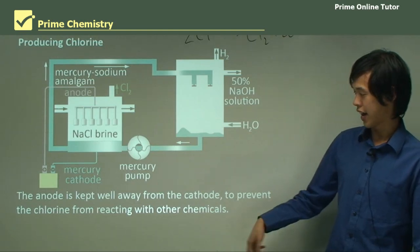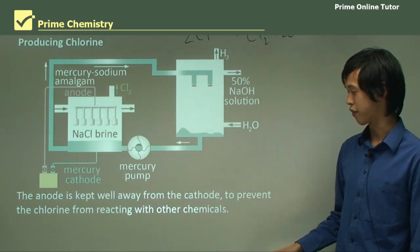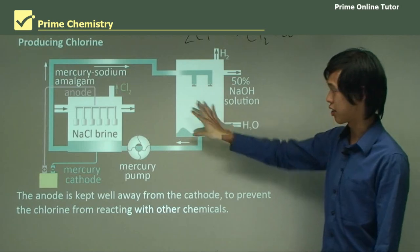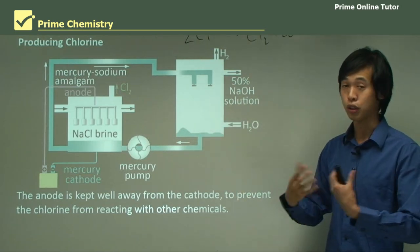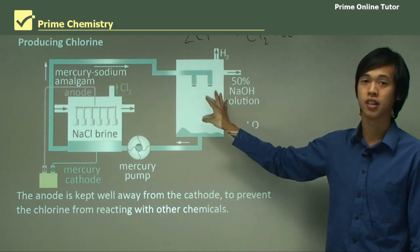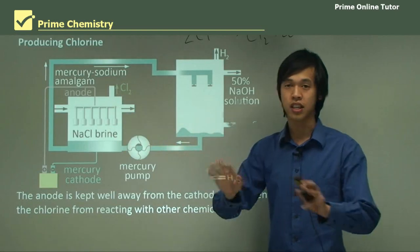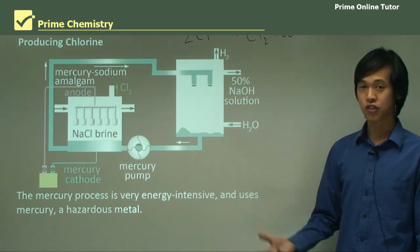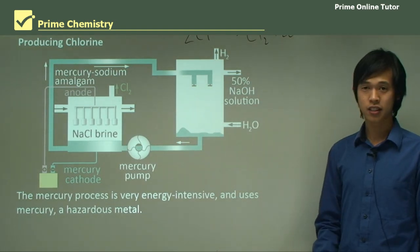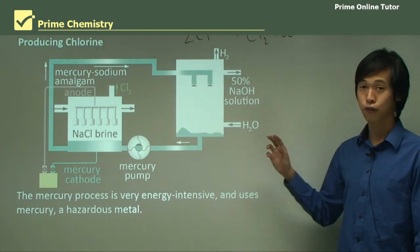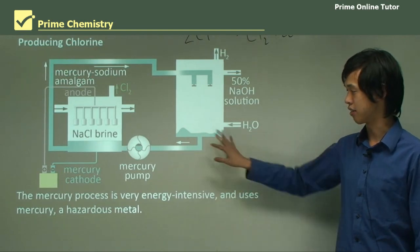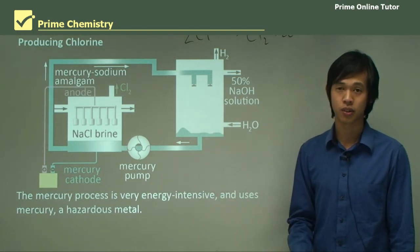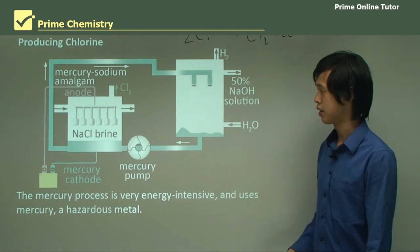The anode is kept well away from the cathode to prevent the chlorine from reacting with other chemicals. Chlorine gas is very reactive, so we keep it away from the sodium hydroxide to prevent pollution of our fairly pure product. In general, the mercury process is very energy intensive — even though the voltage is quite low, it takes a huge amount of current, and it also uses hazardous mercury. So we need alternatives.